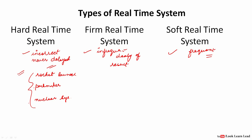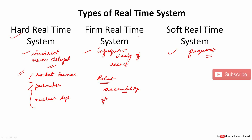In a hard real-time system, meeting the deadline is compulsory. A firm real-time system is one where an infrequently missed deadline is acceptable. For example, a robot assembling parts of a car — if the deadline is missed infrequently it is fine, but frequent misses would degrade assembly quality. In both firm and soft real-time systems, delay means performance degradation, whereas in hard real-time systems, delay means failure.